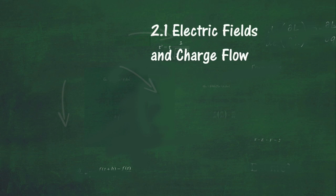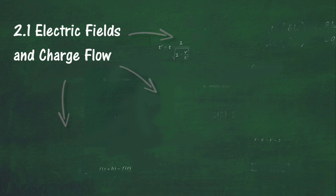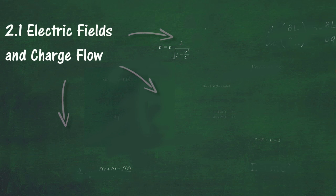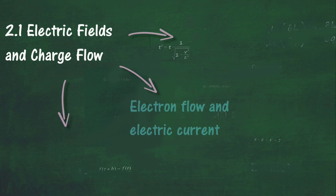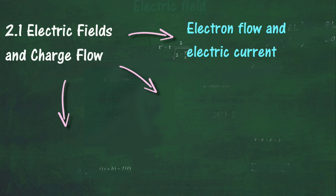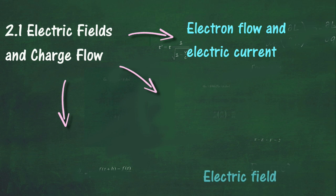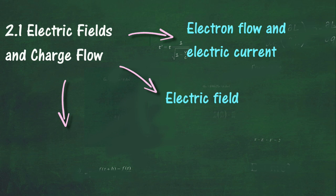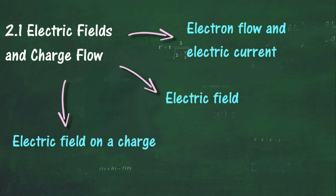In Section 2.1, we will learn about Electric Fields and Charge Flow. At the end of this section, you should be able to state the relationship between electron flow and electric current, and define electric current. Describe an electric field, sketch electric field lines showing the direction of the field, describe the effect of an electric field on a charge, and solve problems involving electric charge and current.